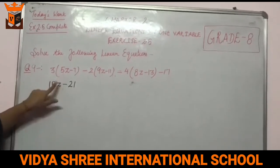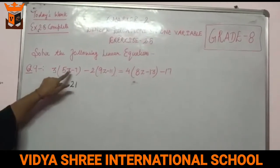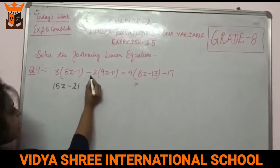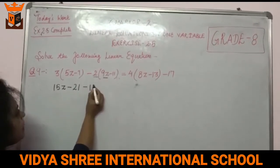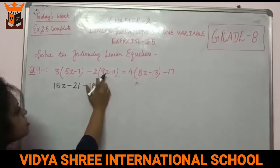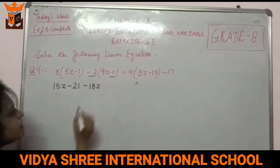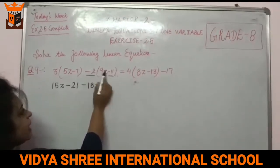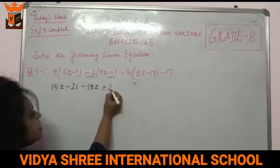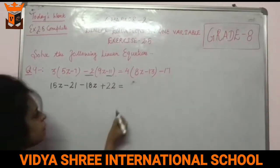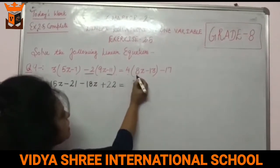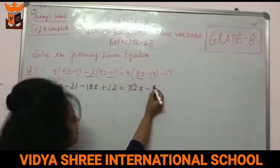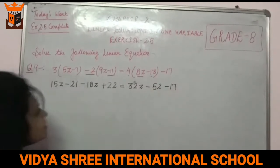Minus 2 multiplied by 9Z gives minus 18Z. Minus 2 multiplied by minus 11 gives plus 22 (minus times minus is plus). On the right side, 4 times 8Z gives 32Z, 4 times 13 gives 52, and minus 17 remains.